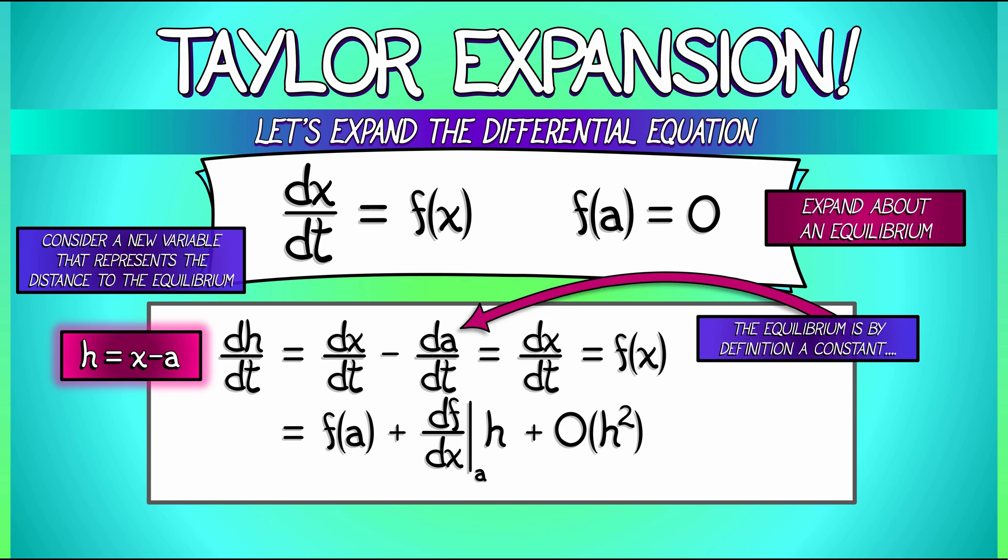Now take a look at this. The zeroth order term f of a. What is that? Aha! That vanishes because a is an equilibrium.